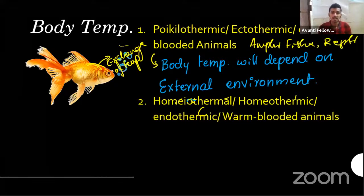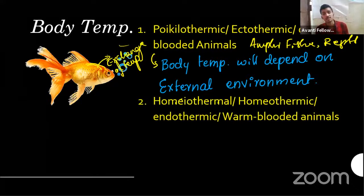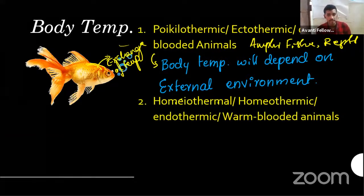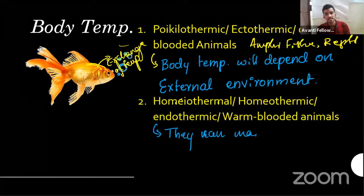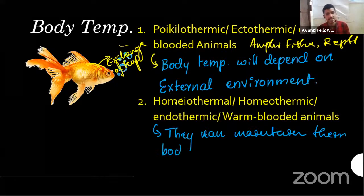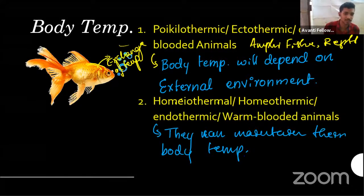Those that can regulate are called homeotherms, homeothermic, endothermic, or warm-blooded animals. Warm-blooded animals can maintain their body temperature. This is a vast topic — we will learn about it again and again, almost three times in your 11th and 12th.